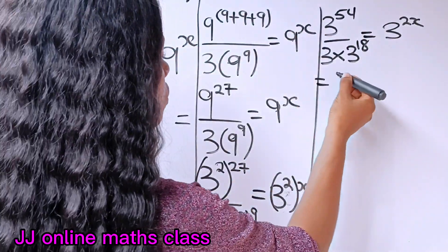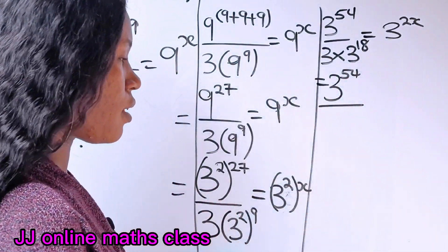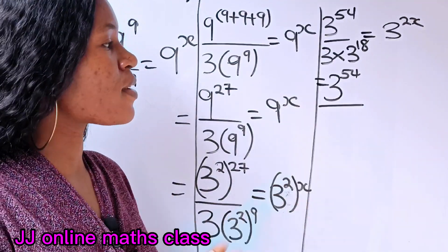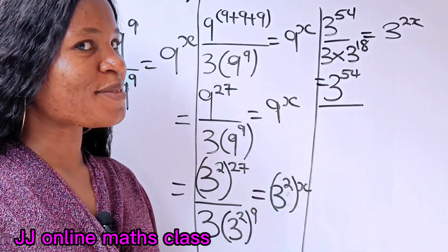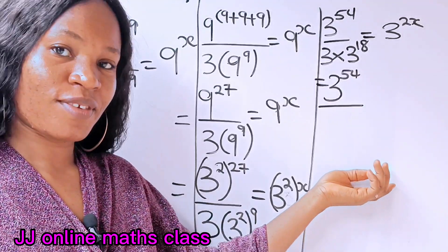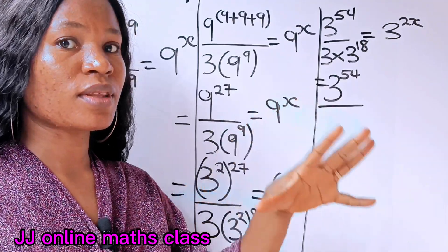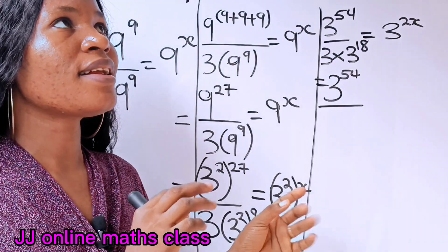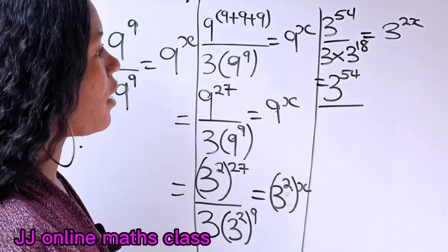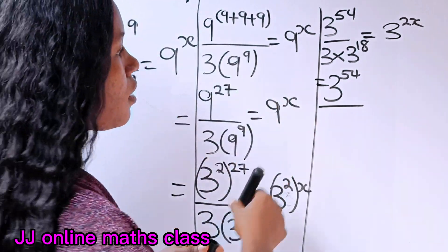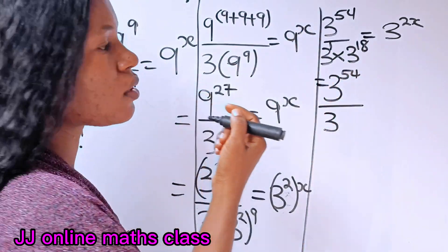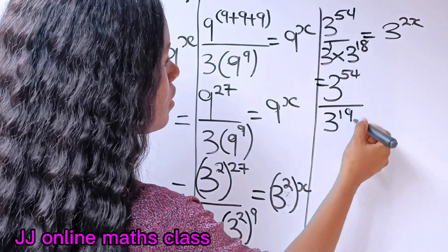So we have three to the power of 54 divided by... before continuing, if this is your first time on this channel, hit the subscription button and click the notification bell. Now, recall: when you have the same base you pick one base. The three in front is the same as three to the power of one, so one plus 18 gives us 19. The denominator becomes three to the power of 19, equal to three to the power of 2x.